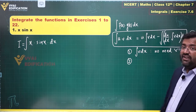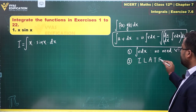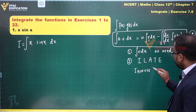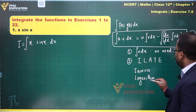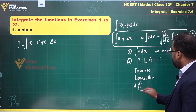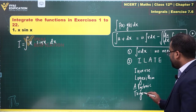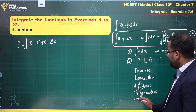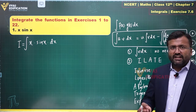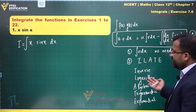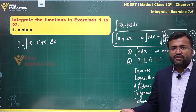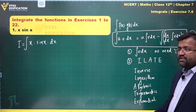The second important thing is the choice of u and v. There is a rule called ILATE: I stands for Inverse trigonometric, L stands for Logarithmic, A stands for Algebraic, T stands for Trigonometric, and E stands for Exponential. Inverse functions like sin⁻¹x and cos⁻¹x are complicated; logarithmic functions like log x are also complicated. Algebraic functions involve x, x², etc. Trigonometric functions are sin x, cos x, and exponential functions are e^x type.